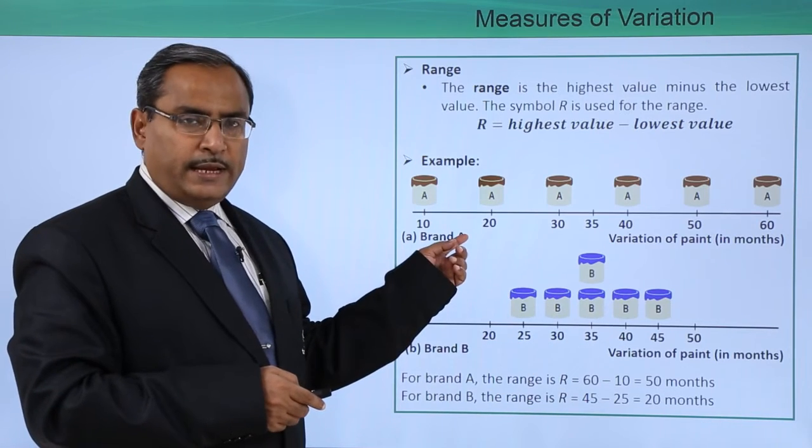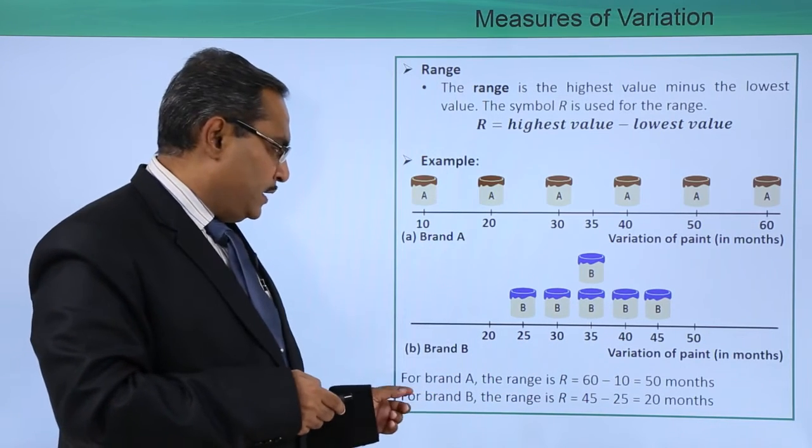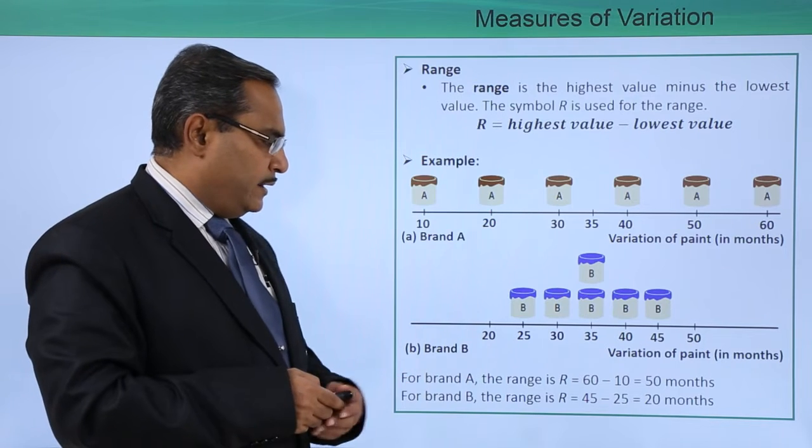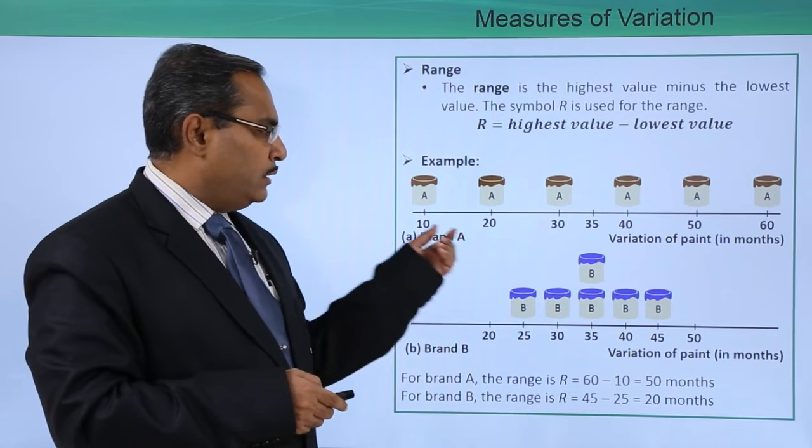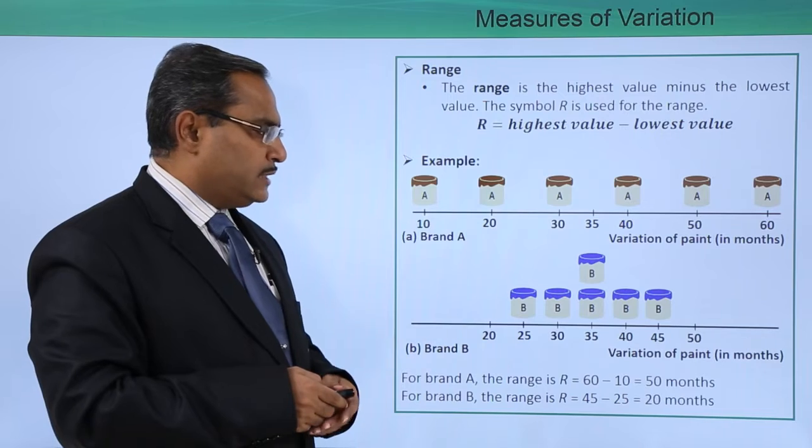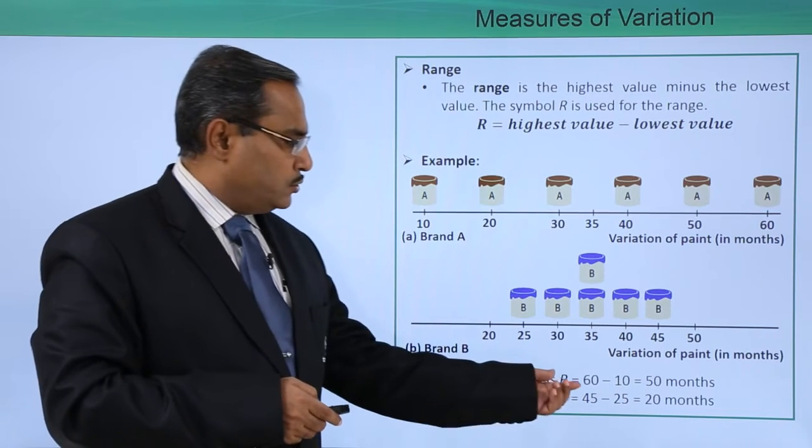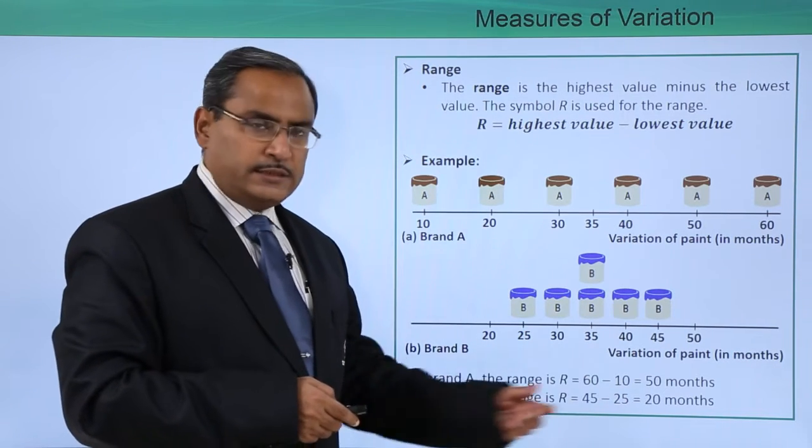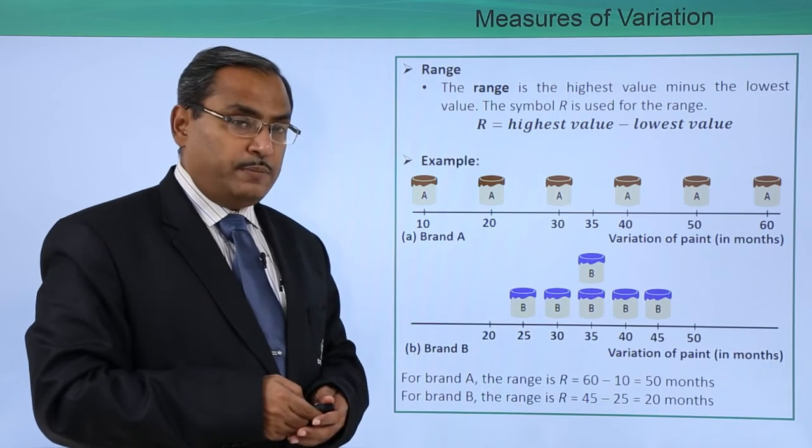Now for this problem A, in case of brand A, what is the minimum? That is 10. What is the maximum? That is 60. So the range will be 60 minus 10, which is equal to 50 months.